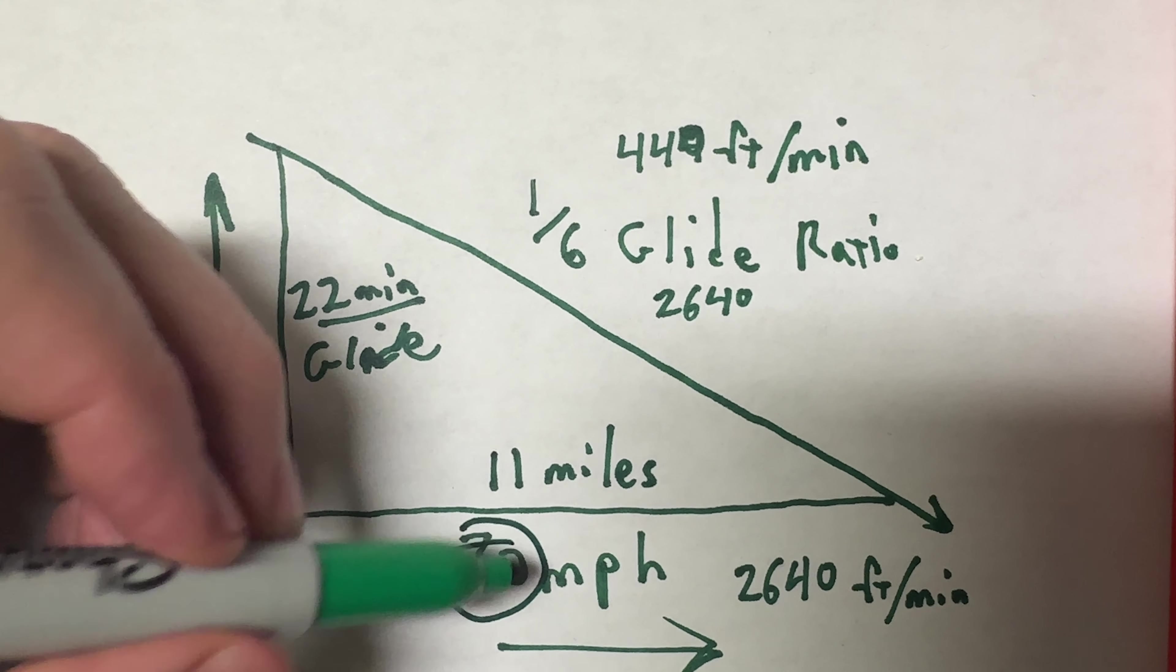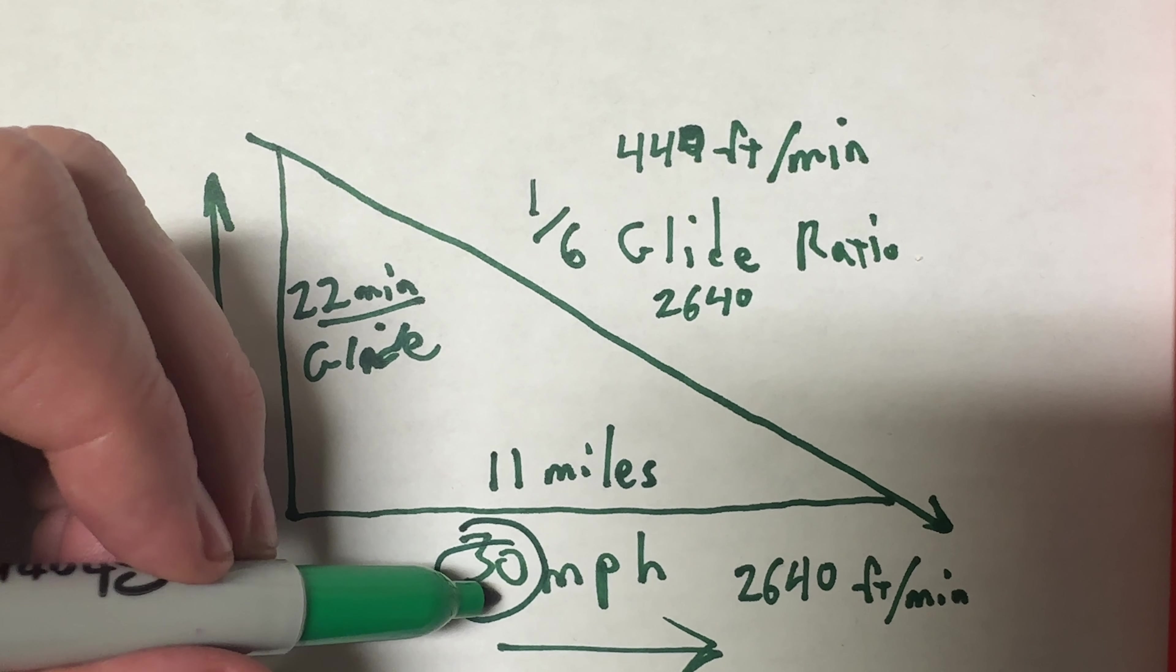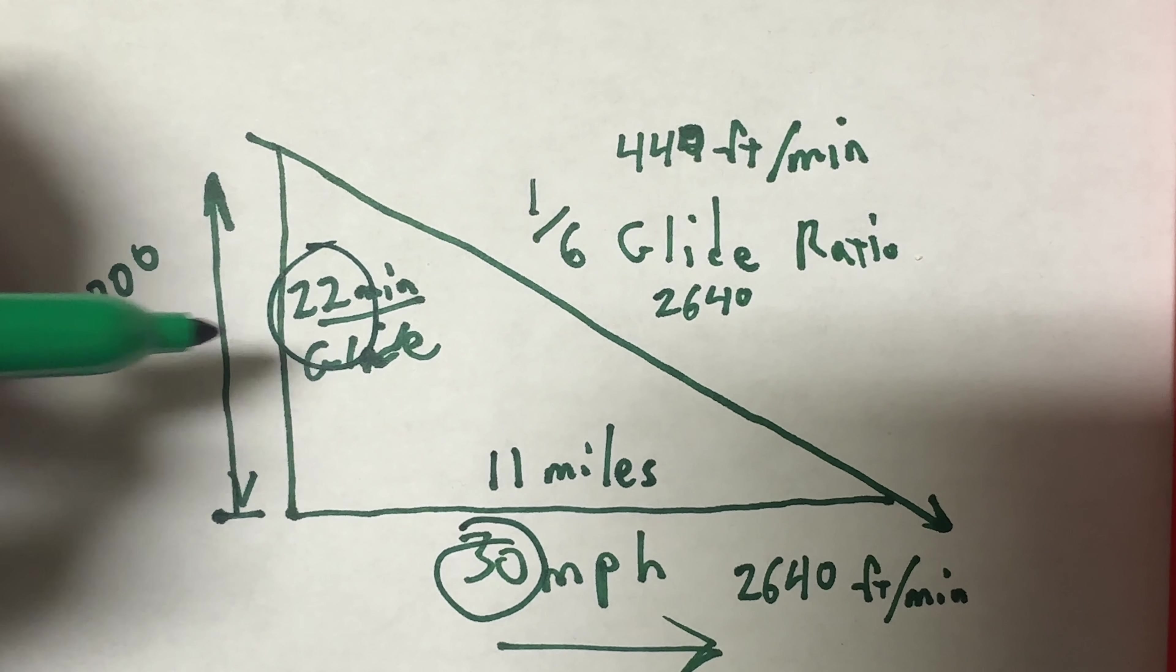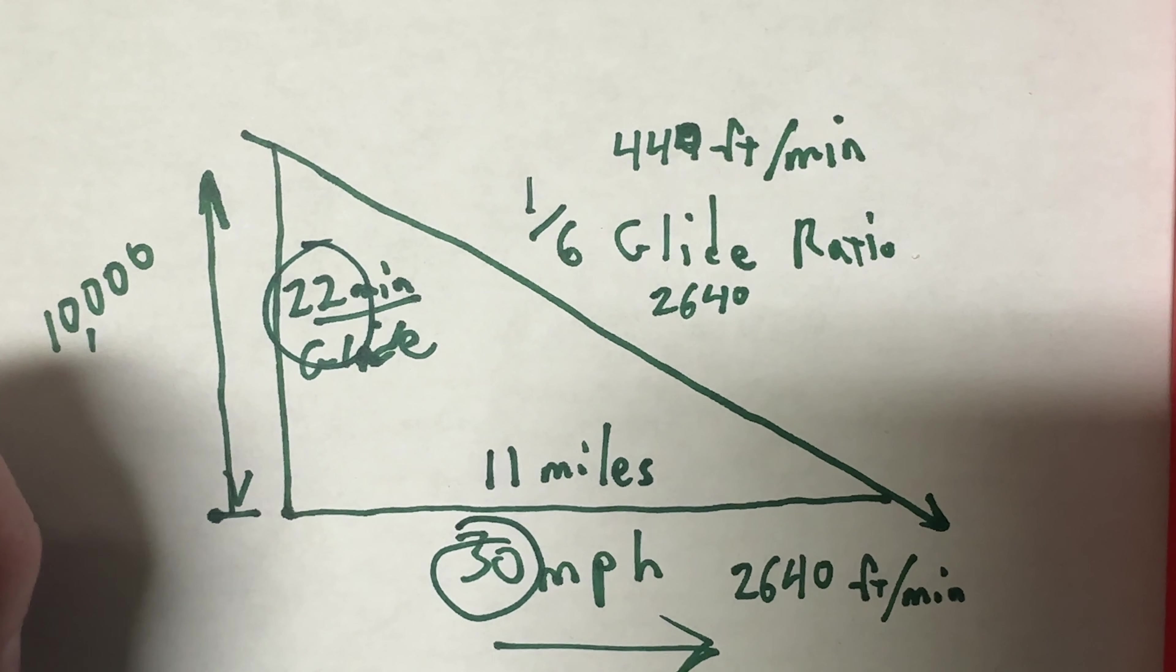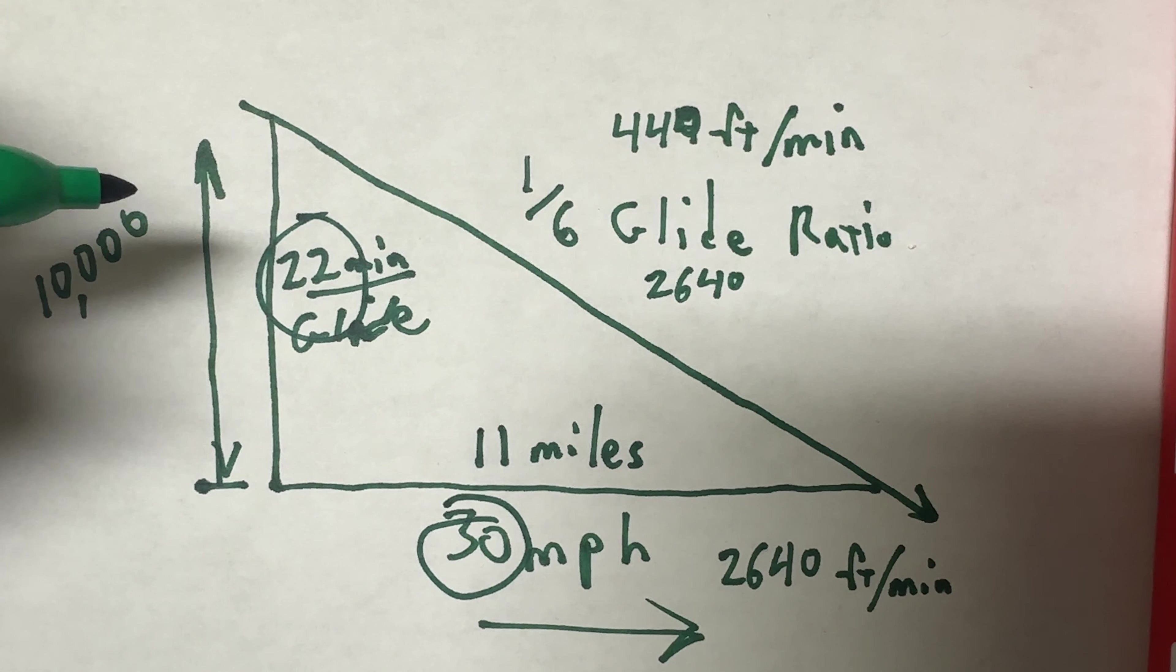Now this 30 miles an hour is a round figure. I mean, I'm probably closer to 25 or so. So that's going to affect the math. But either way, from 10,000 feet at idle, it should take me about 20 minutes to come down. So we'll see what happens Sunday if I get to fly if the weather holds out. So look for that.